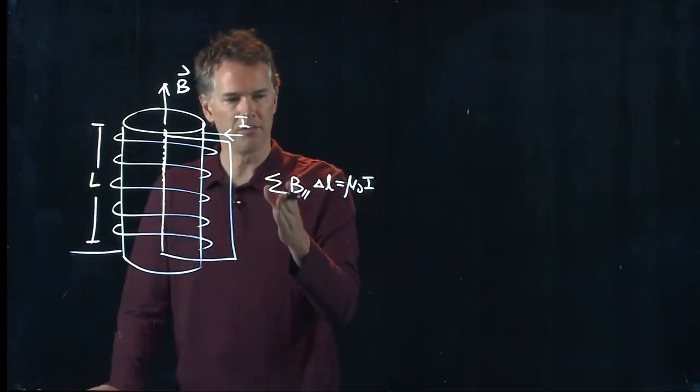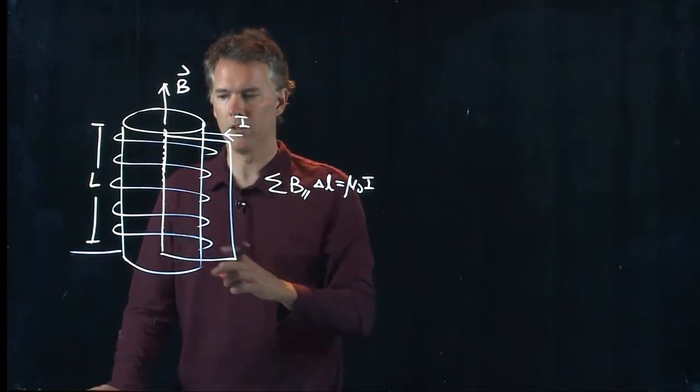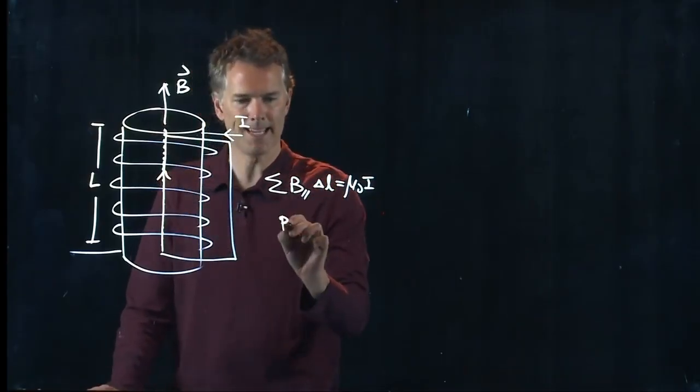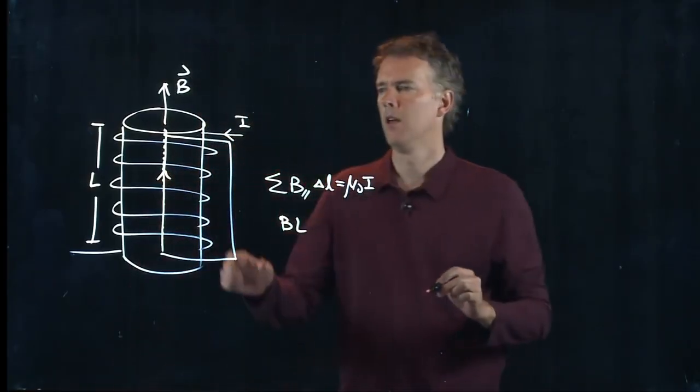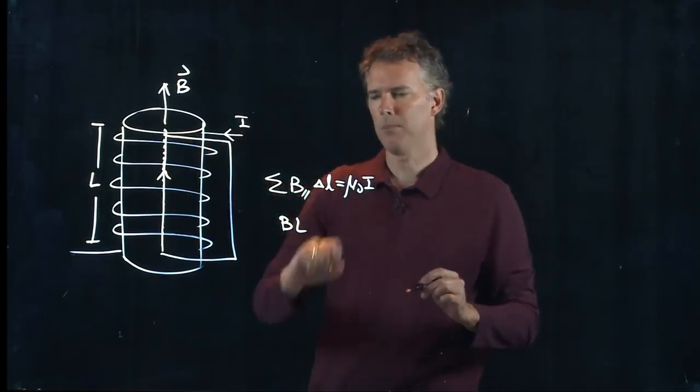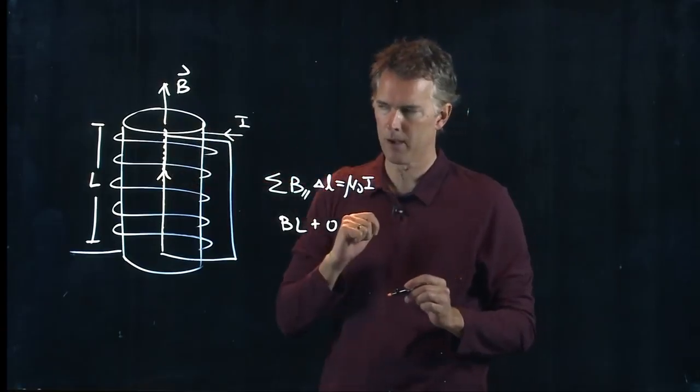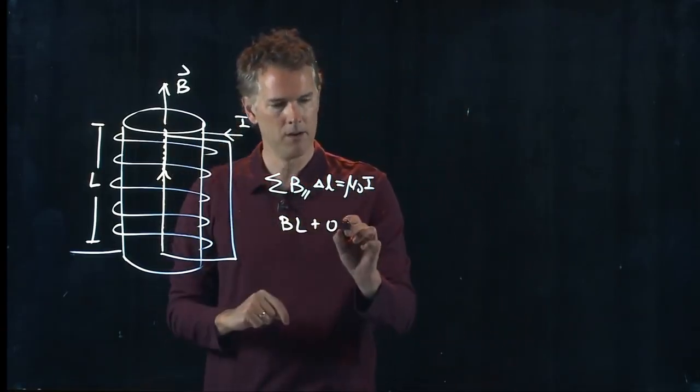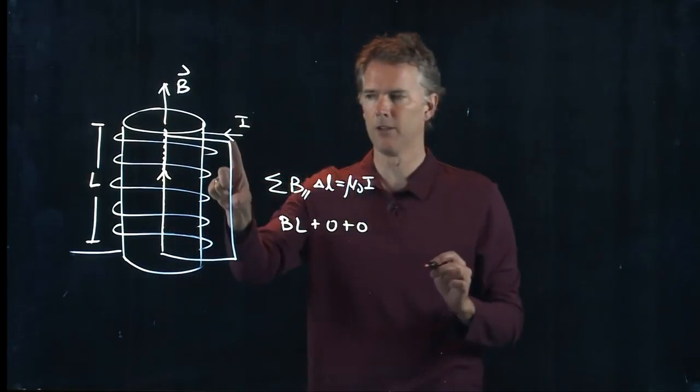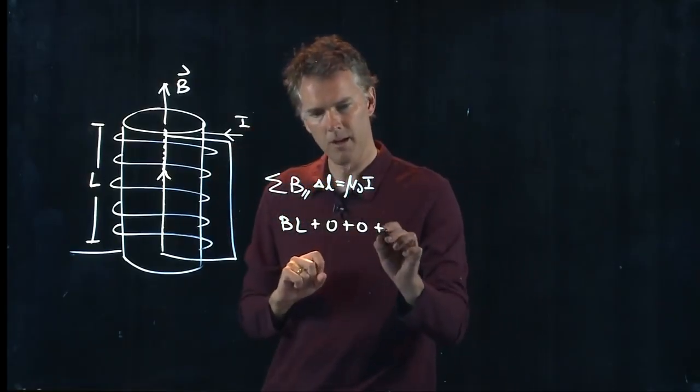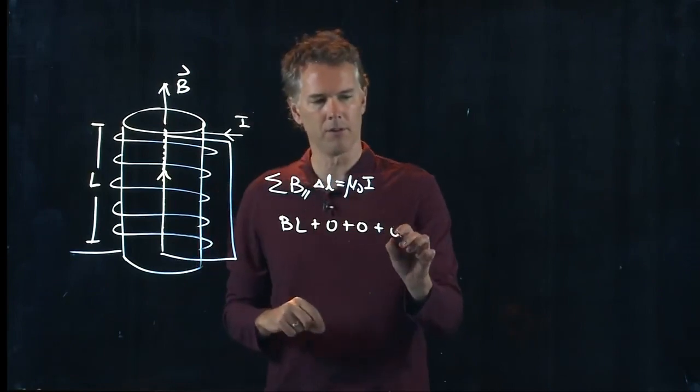And now I just have to sum B over all those lengths. The one up here we know is just B times L. The one on the top is zero because there's no B field pointing that way. The one out here is also zero because there is essentially no B field outside the solenoid. And the last one is also zero.